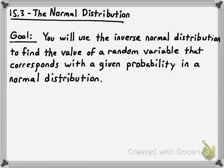Welcome everybody. We're going to be looking today at a different way of looking at the normal distribution. We've been finding the probability of a random variable having a specific value or a range of values within a normal distribution. Now we're going to use the inverse normal distribution to find the value of a random variable that corresponds with a given probability in a normal distribution.